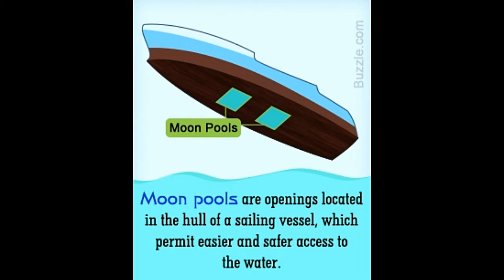But believe it or not, most large ships sailing over deep ocean waters actually have one or more good-sized holes at their bottom, and yet they don't sink. These holes have been given a rather fanciful name: moon pool.